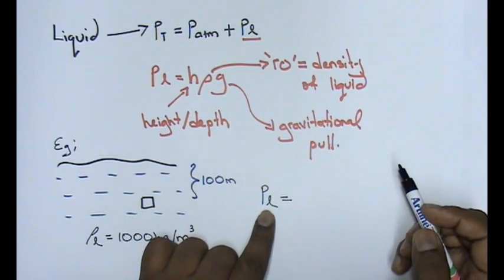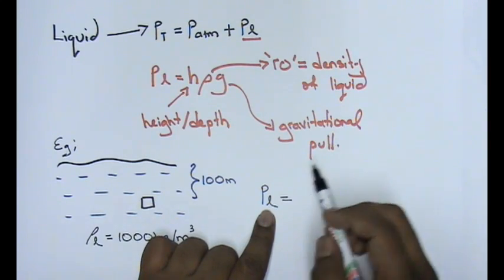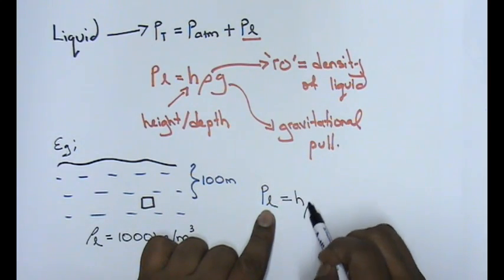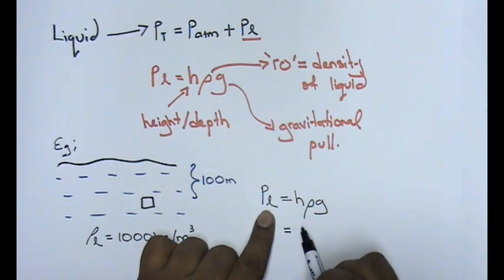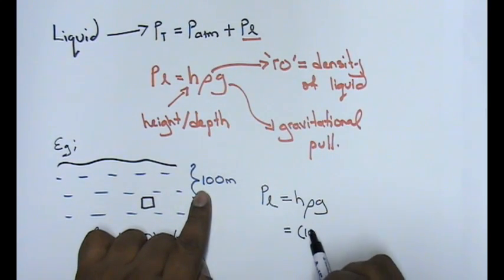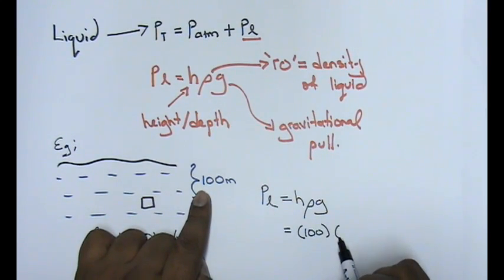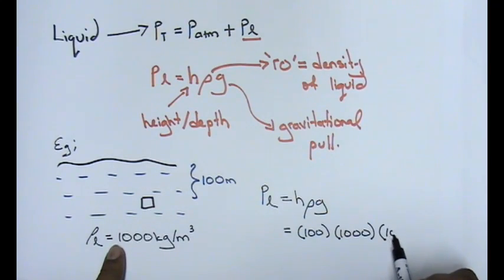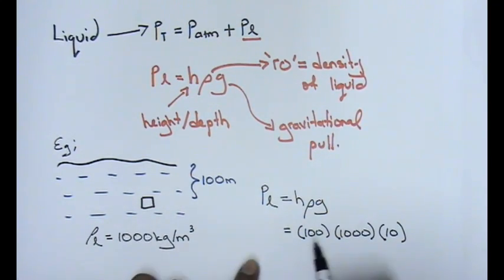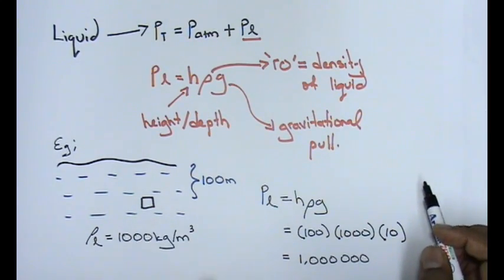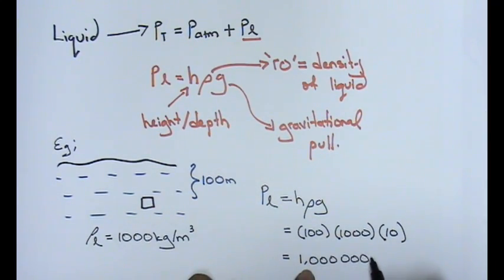To calculate the liquid pressure, your formula h·ρ·g: your h is given to you as 100, density is given to you as 1,000, and gravity is given to you as 10. Your liquid pressure will be 1,000,000 Pascal.